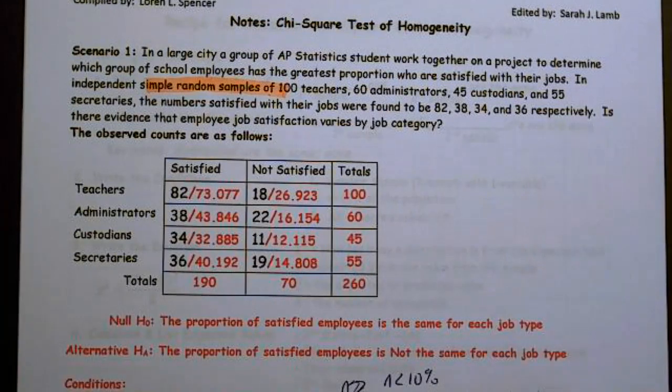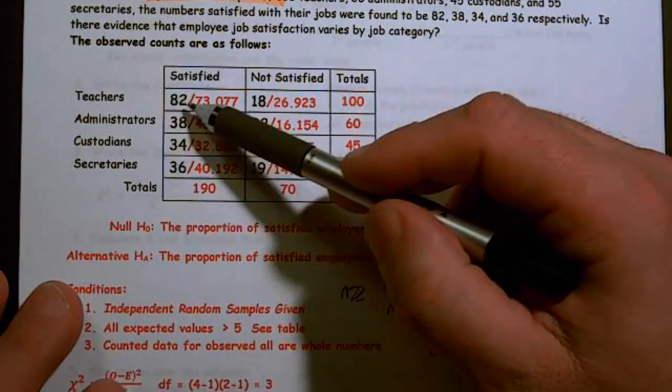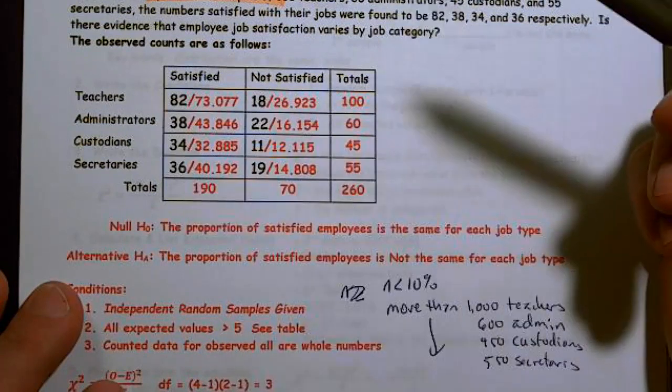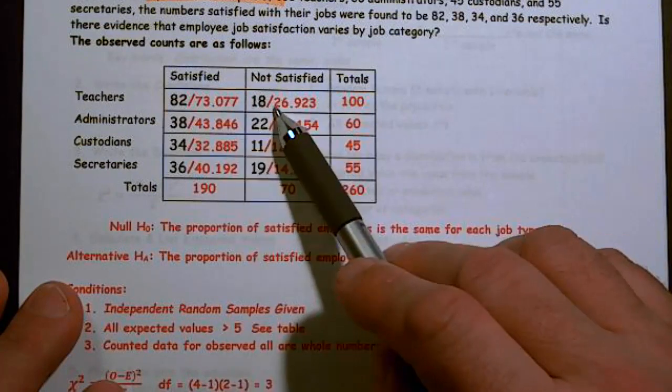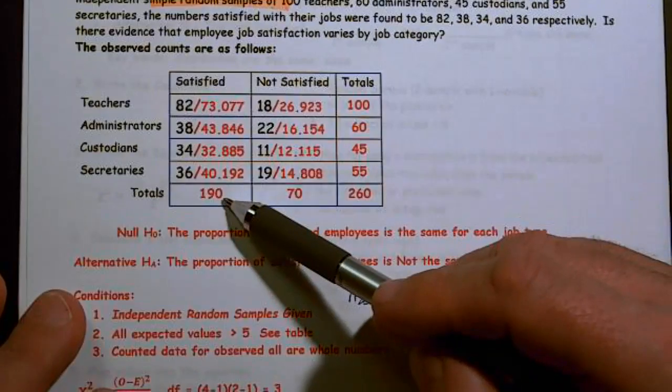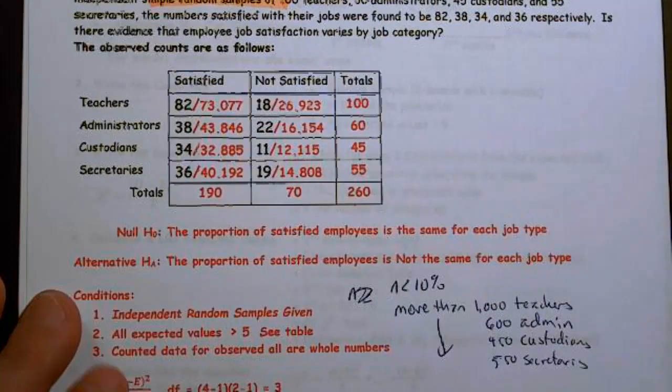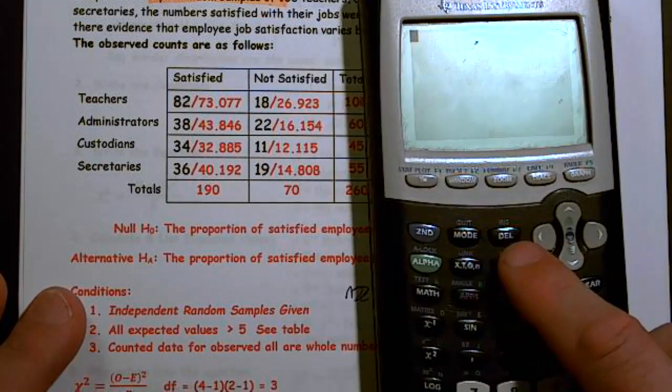The numbers satisfied with their jobs were found to be 82, 38, 34, and 36. Is there evidence that employee satisfaction varies by job category? They give us a table - we had 82 teachers that were satisfied, 38 administrators, 34 custodians, 36 secretaries. In total, we had 82 plus 100 - 100 teachers. It always helps to have these totals because we have to find the expected values: 190 times 100 divided by 260 will give me that. Let's go ahead and calculate our expected values.